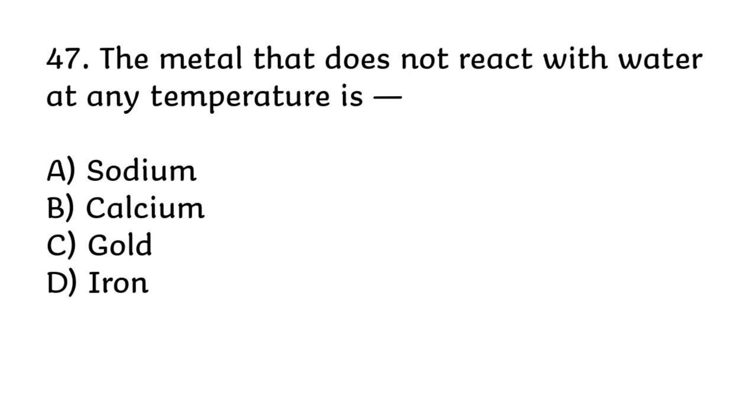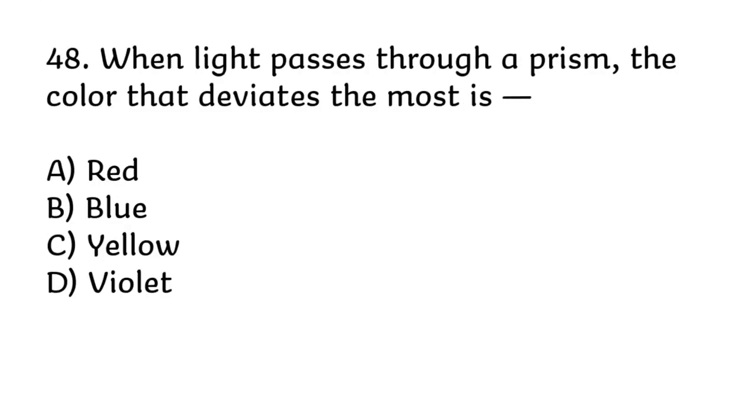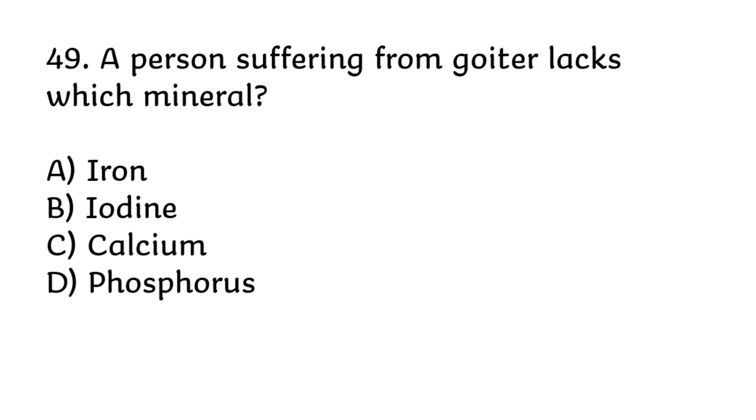The metal that does not react with water at any temperature is? Correct answer is C, gold. When light passes through a prism, the color that deviates the most is? Correct answer is D, violet. A person suffering from goiter lacks which mineral? Correct answer is B, iodine.